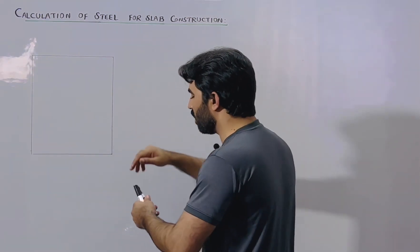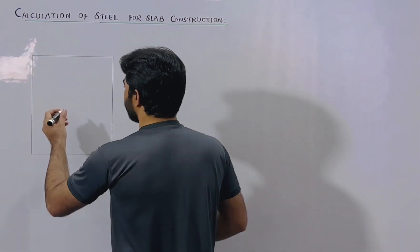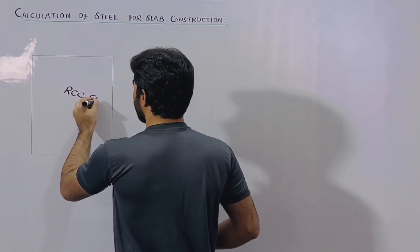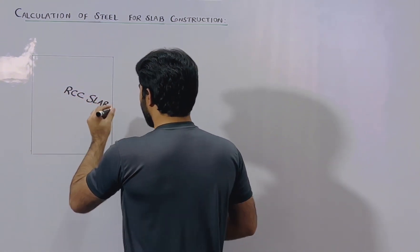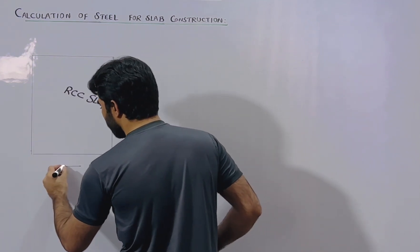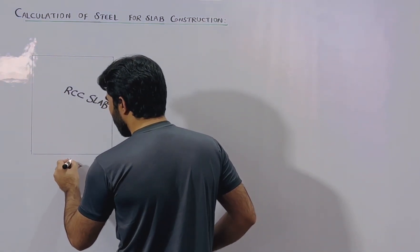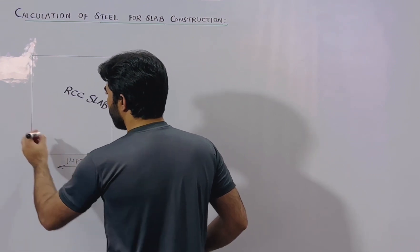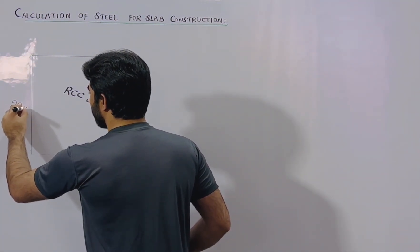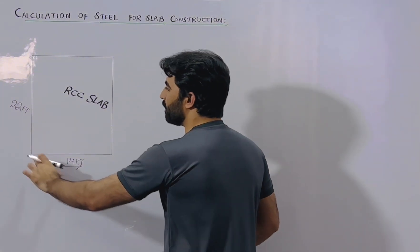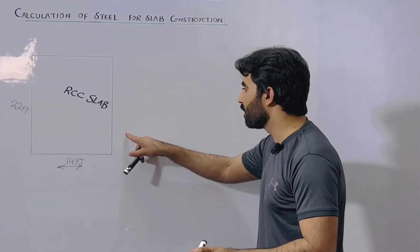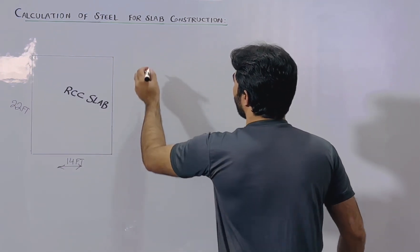As you can see, this is a diagram for RCC slab. This is an RCC slab which size is 14 feet by 22 feet. Width is 14 feet, length is 22 feet. So how much steel is required to cover this RCC slab?